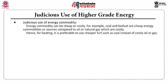The next principle is judicious use of energy commodity. Energy commodities can be cheap or costly. For example, coal and biomass are cheap energy commodities compared to oil or natural gas, which are costly. Hence, for heating it is preferable to use cheaper fuel such as coal instead of oil or gas.